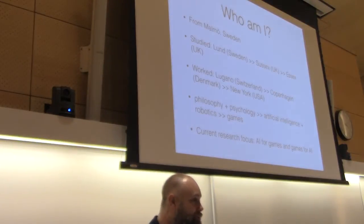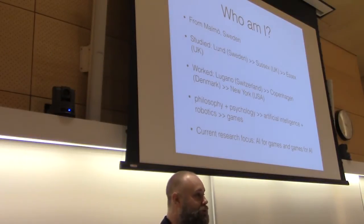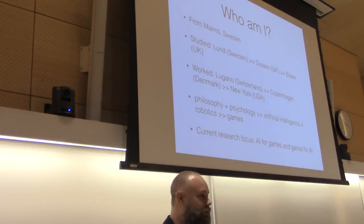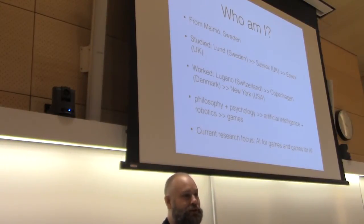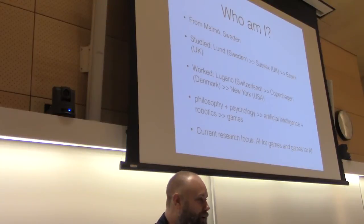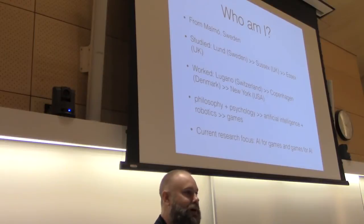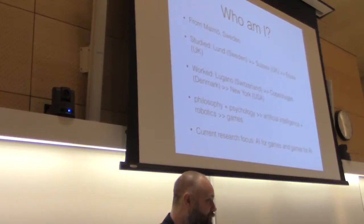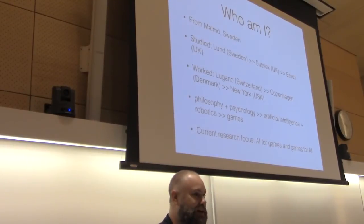I'm Julian Togelius of New York University, the second computer science department — we have two these days, just to confuse everybody, myself included. I also share offices with the game center, which is the game design department. I'm going to talk about games as benchmarks for artificial general intelligence. Feel free to interrupt if there's something you vehemently disagree with — which you may.